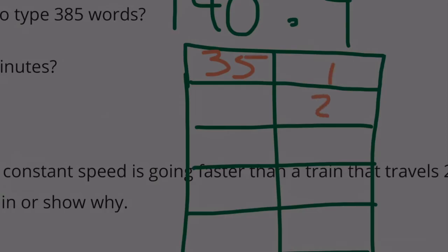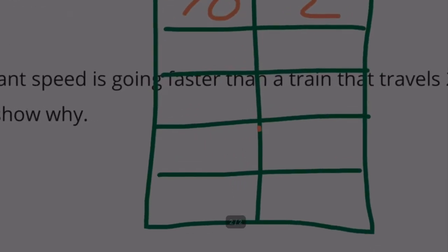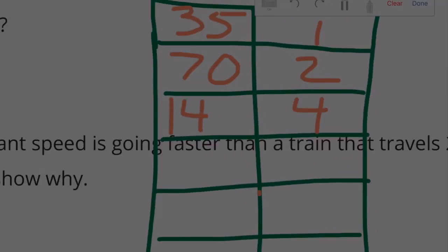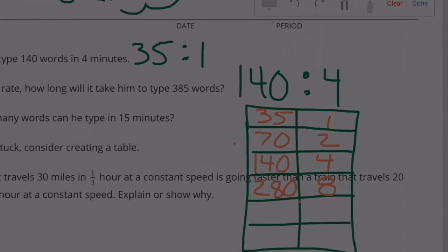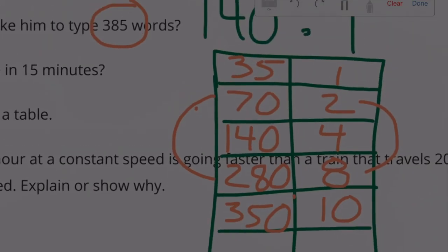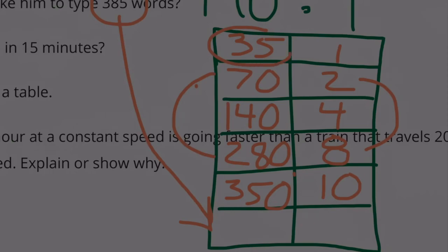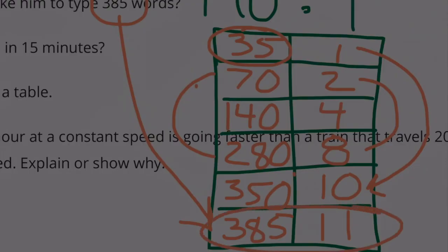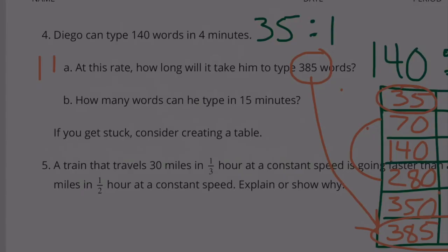35 words to 1 minute. 2 minutes is double 35, which is 70. Double that to get 4 minutes and 140 words. Double again: 8 minutes and 280 words. Add 70 to get 350 words at 10 minutes. Then add 35 to get 385 words, adding 1 more minute gives us 11 minutes. So it will take Diego 11 minutes to type 385 words.